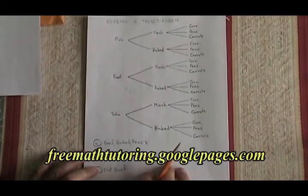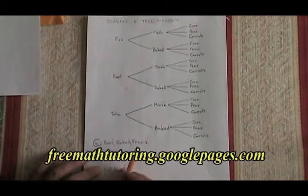The type of question you might get, in which you are asked to read a tree diagram, might be like question A down here: What combinations involve beef with baked potato and peas? How many combinations are there, and what fraction of the situation do they represent?